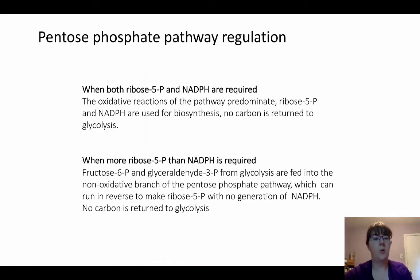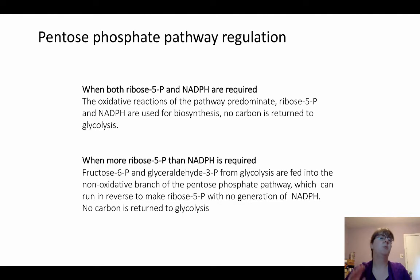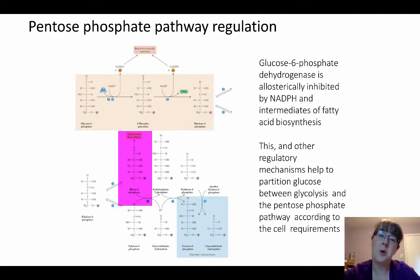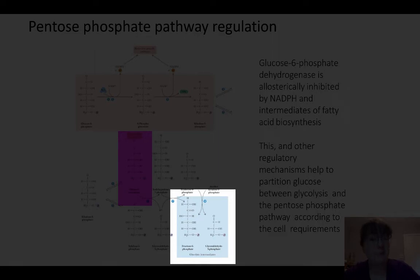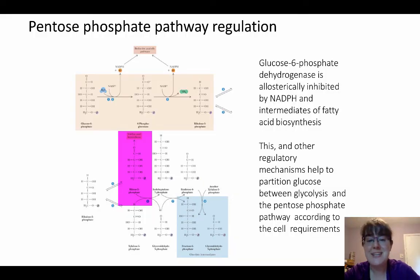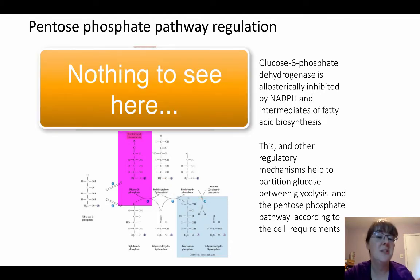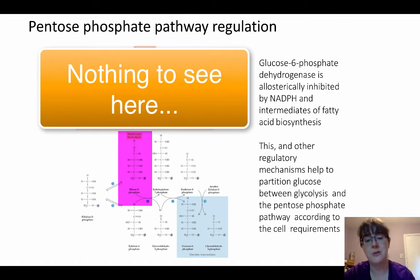But what if what we really need is ribose-5-phosphate and we don't actually need the NADPH? We're not worried about fatty acid biosynthesis, but we could really use some nucleic acid biosynthesis. Notice that when we talk through the whole pathway, we ended with intermediates in glycolysis, and these enzymes are reversible. So we could actually feed in fructose-6-phosphate and glyceraldehyde-3-phosphate and go through this pathway backwards to ribose-5-phosphate, completely ignoring those initial three oxidative steps and not even worrying about making NADPH.